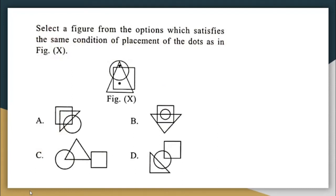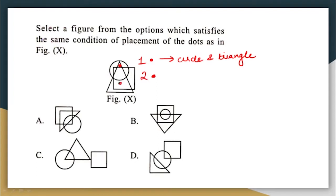Select a figure from the options which satisfies the same condition of placement of dots as in figure X. Let us look at the question figure. There are two dots. The first dot is contained only in the circle and the triangle — it is actually outside the square. The second dot is inside the triangle and the square alone — it is not part of the circle. That is what is special about these two dots.